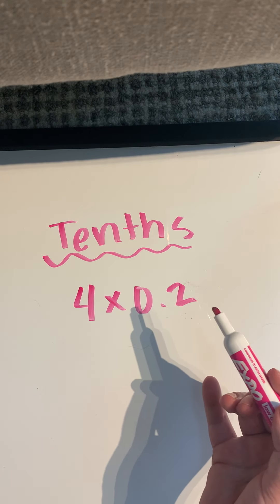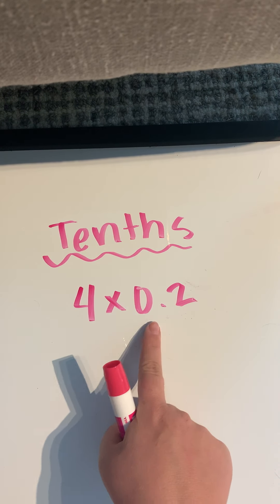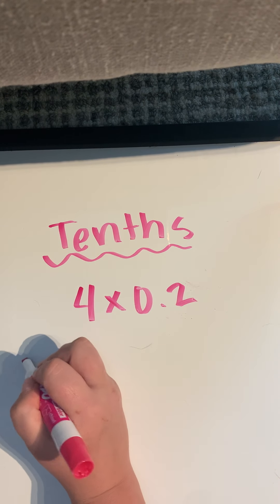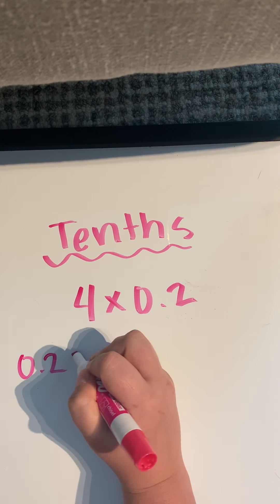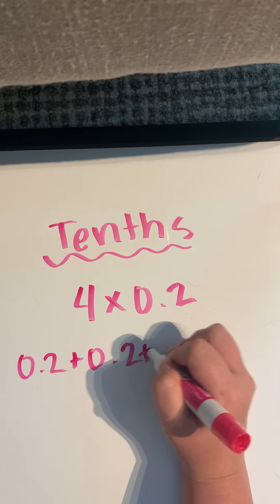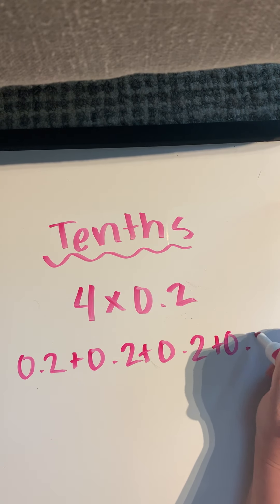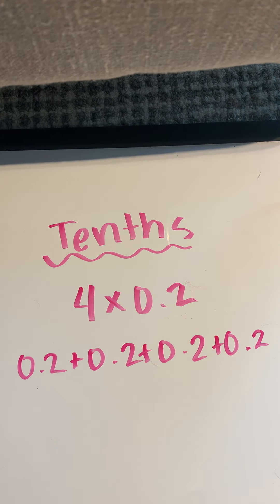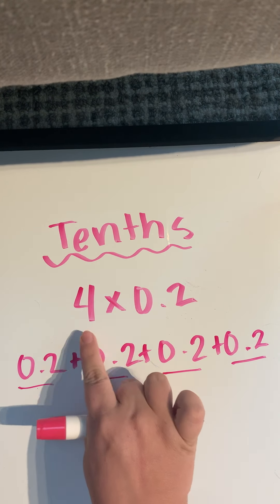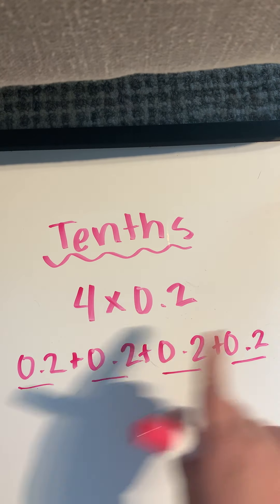And all of this just means that there are 4 groups of 2 tenths. So if I break it down further, this is what it actually looks like: I've got 2 tenths 4 times — 0.2 plus 0.2 plus 0.2 plus 0.2. So I have 4 groups, 1, 2, 3, 4 — four groups of 0.2.